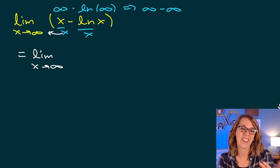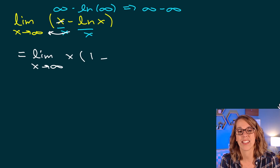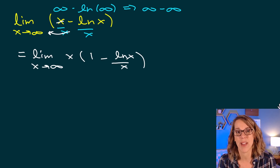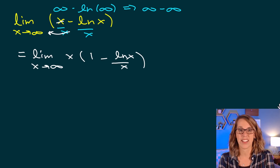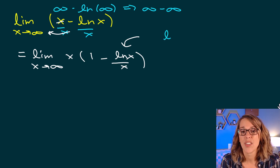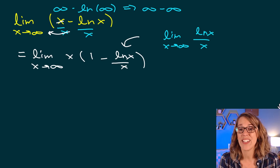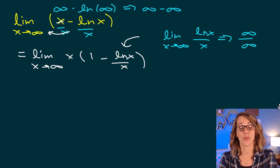Factoring out X, I get X times the quantity 1 minus the natural log of X over X. The X divided by X cancels to give 1, and the natural log of X divided by X is written as natural log of X over X. I can verify by multiplying back through. Now I can apply L'Hôpital's rule to the natural log of X over X piece. As X approaches infinity, that part goes to infinity over infinity.